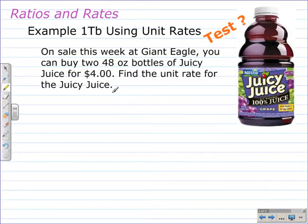Example 1TB, using unit rates, is a little more complicated than the previous problem. On sale this week at Giant Eagle, you can buy two 48-ounce bottles of Juicy Juice for $4.00. Find the unit rate for the Juicy Juice. The twist in this problem is instead of just getting one 48-ounce bottle, you're getting two.